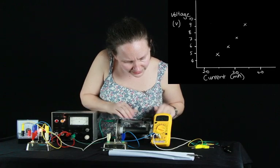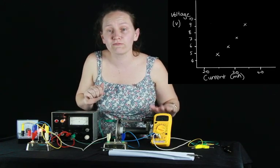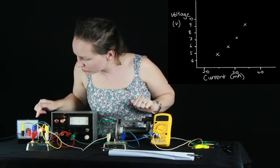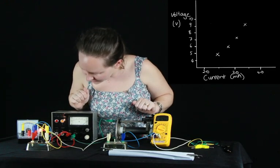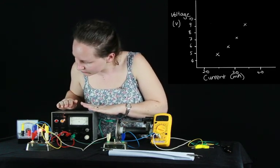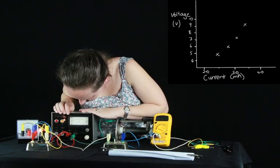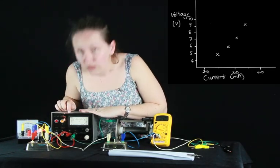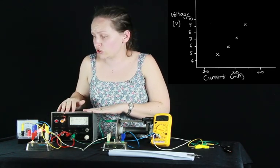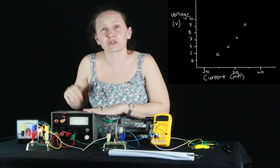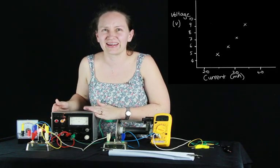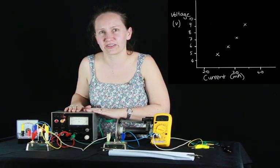Current of 3.6 milliamps and the voltage drop of 9.4 volts. And finally, at our limit, we've got 4 milliamps and the voltage drop which has gone off the scale. We can assume that this voltage drop is somewhere between 10 and 12 volts as our power supply is only putting out 12 volts.